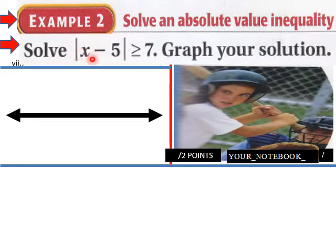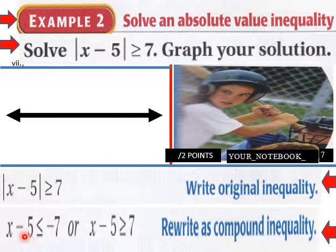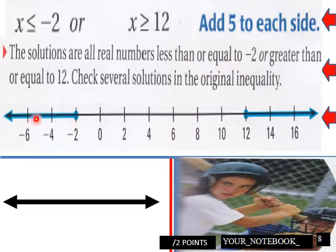Example 2: |x minus 5| greater than or equal to 7. Graph your solution. We rewrite as x minus 5 is less than or equal to negative 7, or x minus 5 is greater than or equal to positive 7. Adding 5 to each side gives x is less than or equal to negative 2, or x is greater than or equal to 12. Solutions are all reals less than or equal to negative 2 or greater than or equal to 12 — check several solutions. The graph shows two rays going in opposite directions.